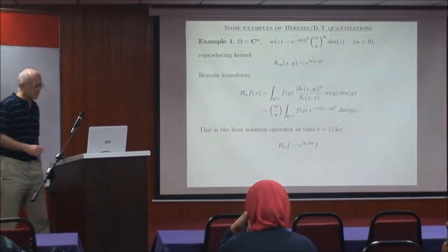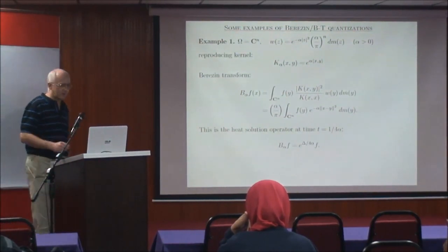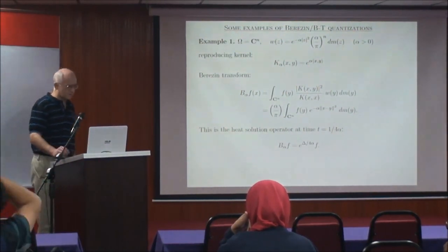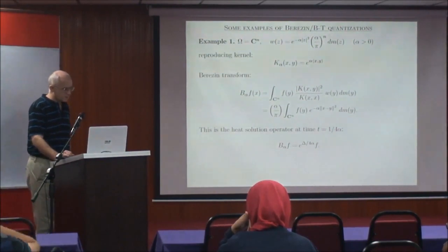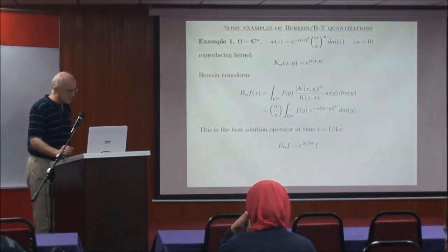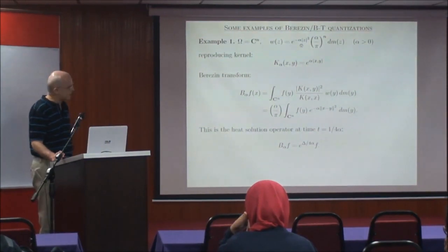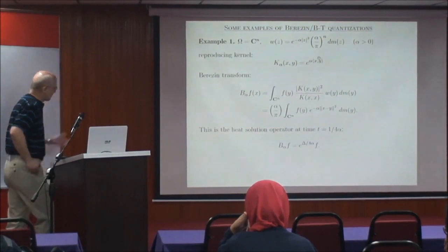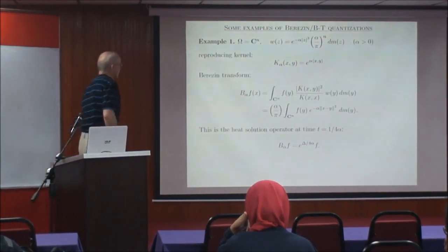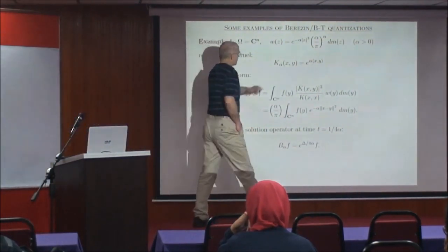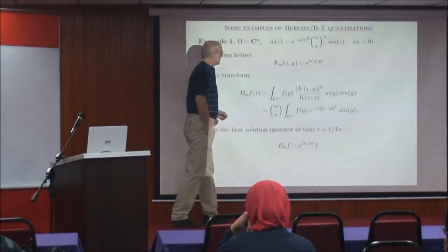So now let me show you some examples of how this works. The first one is the one we already had two lectures ago, which is that of the Fock space on C, or more generally on C^n. We take the Gaussian measure as the weight: e to the minus alpha times the norm squared, times the normalizing constant alpha over pi to the power n, to make it a probability measure.